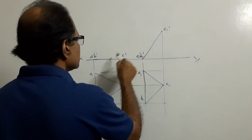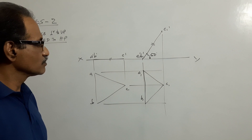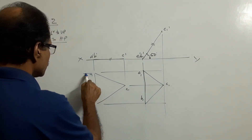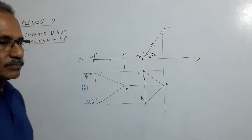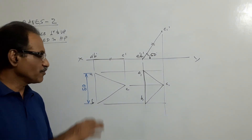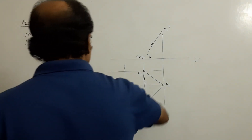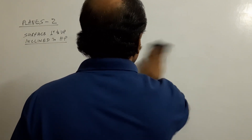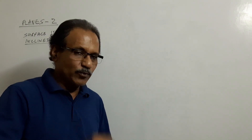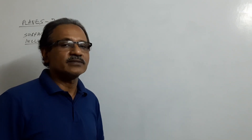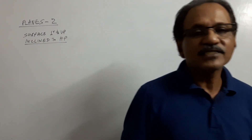This is simple: this distance is equal to this distance and this angle is 15 degrees. Now we will draw one more problem. This is a circular lamina. Consider a circular lamina resting on HP on a point, with the surface perpendicular to VP and inclined to HP by some angle, so that the plan is an ellipse with minor axis 30 mm.